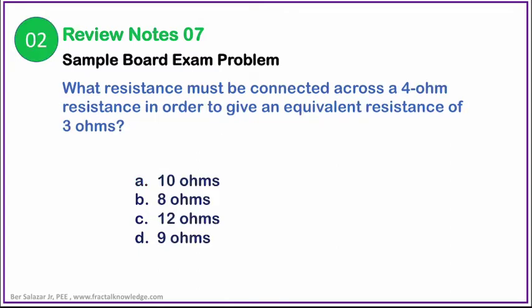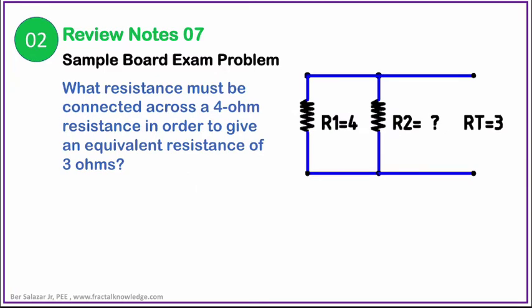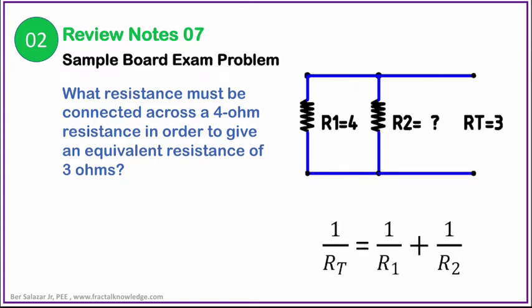Our second problem in the parallel circuit is just finding for the parallel resistance. It reads like this: what resistance must be connected across a 4-ohm resistance in order to give an equivalent resistance of 3 ohms? Shown in the slide is the possible circuit drawing. To start the calculation, R1 is 4 ohms and R2 is unknown, and the total resistance is 3 ohms. Just looking at it gives your mind the formula for parallel resistance.